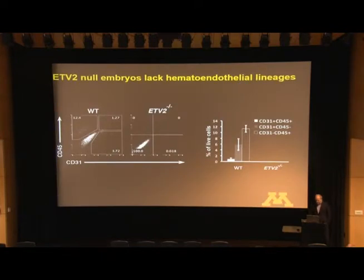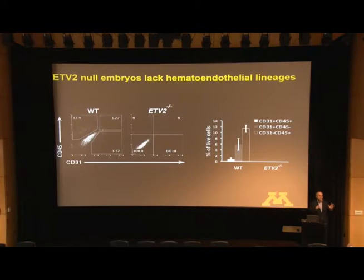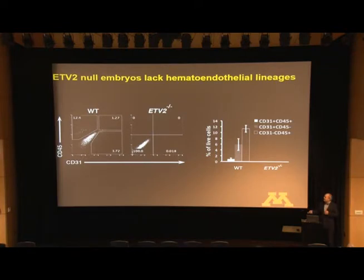We further characterized using flow cytometry in the mutant embryo at E18 as well as wild type controls, using blood markers CD45 and endothelial marker CD31. While the wild type embryo clearly has these lineages, they're completely absent in the mutant—lacking CD31 cells and lacking CD45 cells. When culturing dissociated embryos on OP9 cultures, wild type embryos have all the progenitors for these lineages, but ETV2 mutants lack these progenitors entirely.